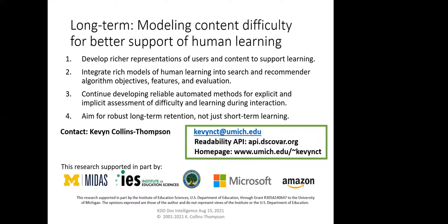Some of the models we've described are available now as a REST API for non-commercial use at api.discover.org, with documentation and sample Python code. Content difficulty is a fascinating dimension to content representation — important for many applications because human learning encompasses so much interesting behavior. Developing richer representations and integrating models of human learning into search and recommender systems is really exciting, as is continuing to develop explicit and implicit assessment of difficulty, learning, discovery, and curiosity — especially focusing on what helps people long-term rather than just short-term user studies.